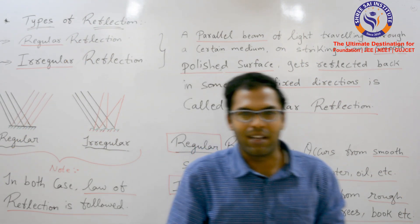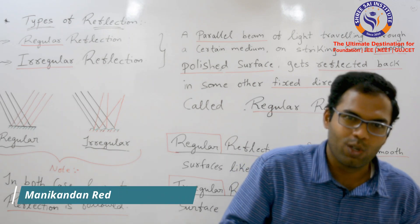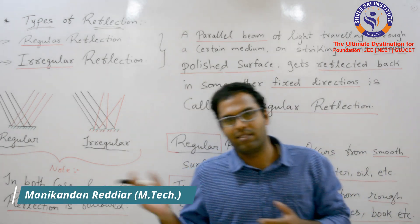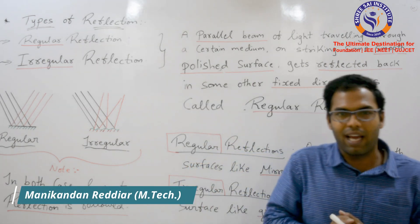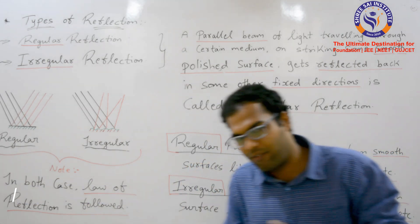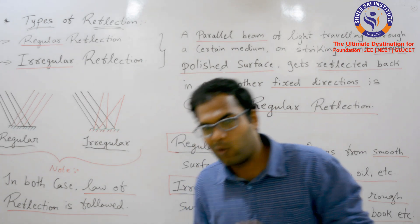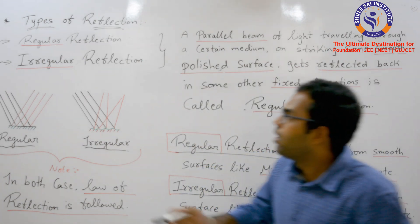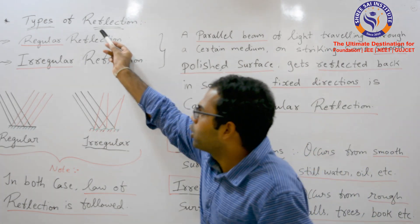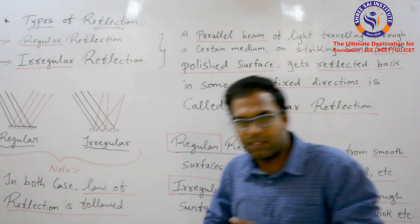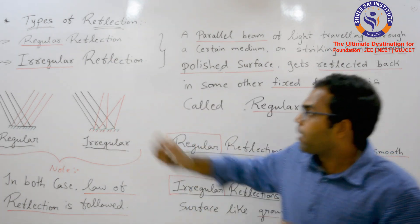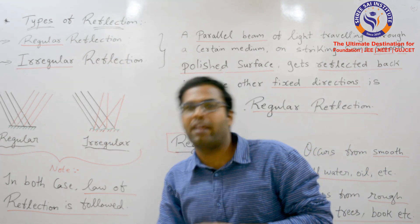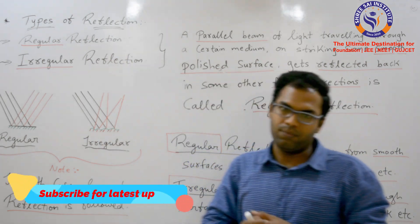Hello guys, welcome to Seysa Institute. Today we are going to start the topic: types of reflection. There are two types of reflections — regular reflection and irregular reflection.